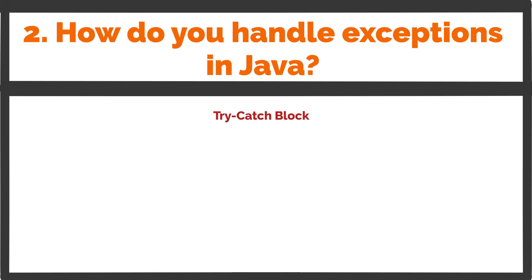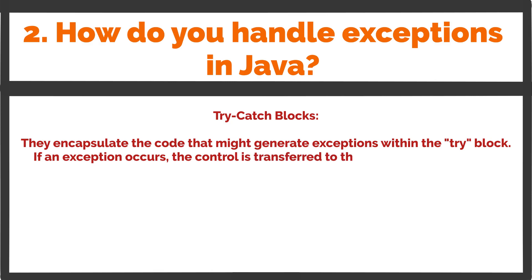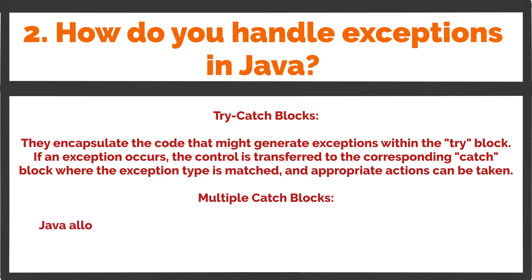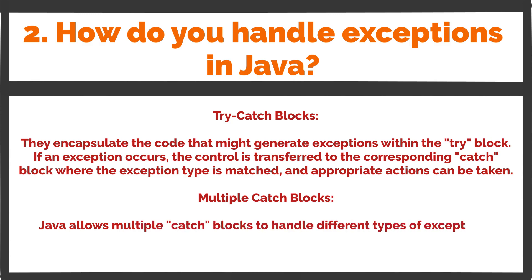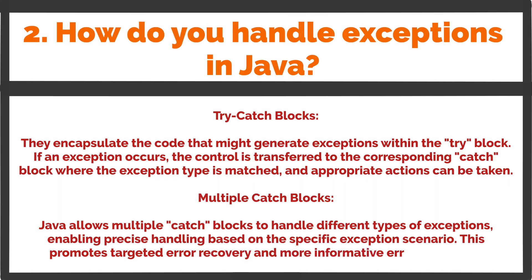Try-catch blocks encapsulate the code that might generate exceptions within the try block. If an exception occurs, control is transferred to the corresponding catch block where the exception type is matched and appropriate actions can be taken. Java allows multiple catch blocks to handle different types of exceptions, enabling precise handling based on the specific exception scenario. This promotes targeted error recovery and more informative error messages.